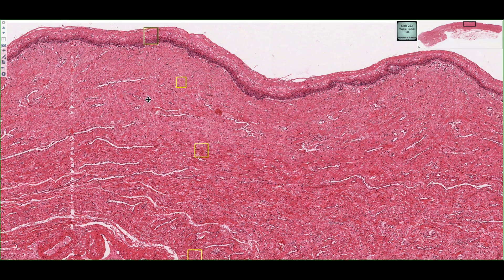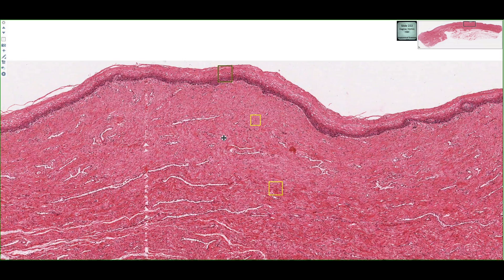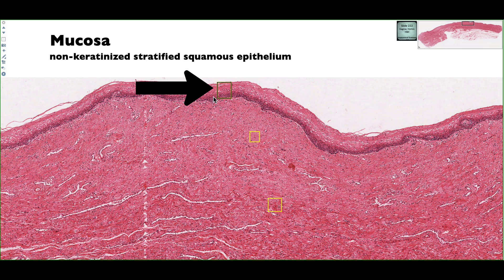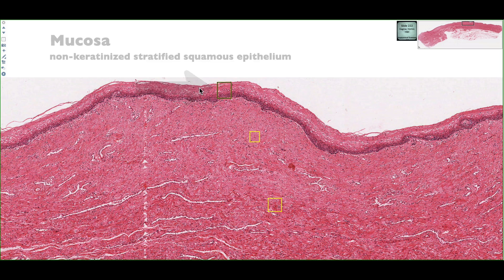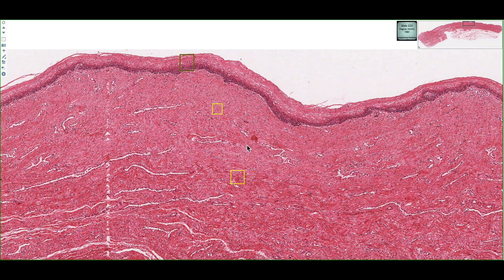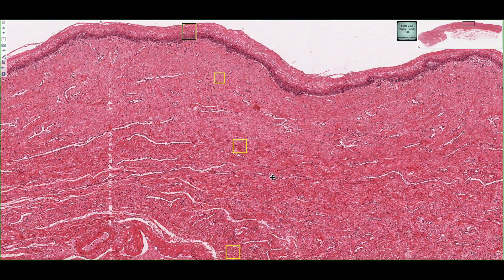The first, if we look at the superficial aspect of this section, we can see a non-keratinized stratified squamous epithelium, and it's supported by a lamina propria, which is just connective tissue and some blood vessels.